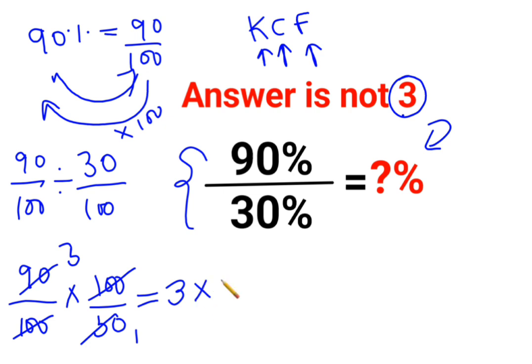So here, the answer will be 3 multiplied by 100, that is equal to 300, that is equal to 300%. I hope this is very clear to everyone.